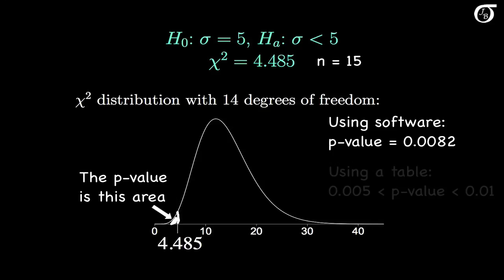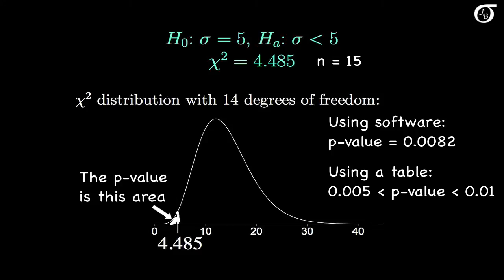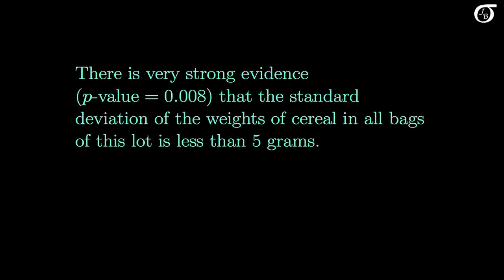If we didn't have access to software and had to use a chi-square table, we couldn't find an exact value, but we could say the p-value lies between 0.005 and 0.01. This is a small p-value, giving strong evidence against the null hypothesis and in favor of the alternative. The evidence would be considered statistically significant at significance levels like 0.05 or even 0.01. So there is very strong evidence that the true standard deviation is in fact less than 5 — it means the standard deviation of the weights of cereal in all bags of the lot from which we sampled is less than 5 grams. We have strong evidence to show our boss that we've satisfied their demand.